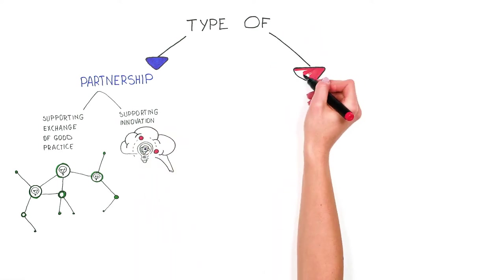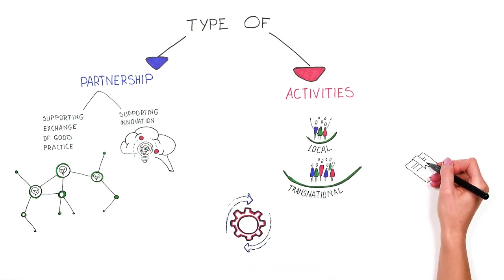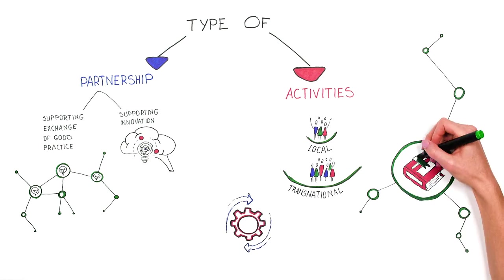Strategic partnerships can include a range of activities: local activities, transnational meetings, the development of concepts and different products, learning mobilities, and dissemination events. The combination of these activities will be translated into an activity plan or a partnership programme.